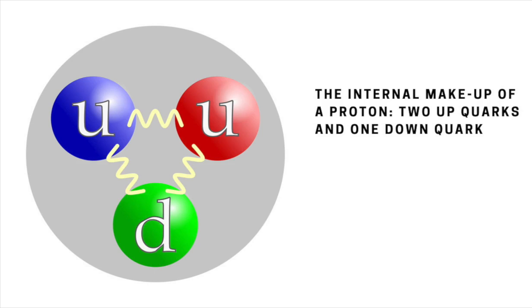Protons are composed of two up quarks of charge plus 2 over 3 of the unit charge, and one down quark of charge minus a third.